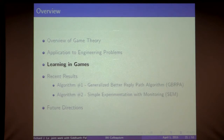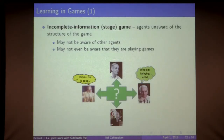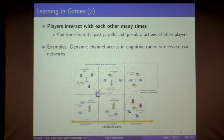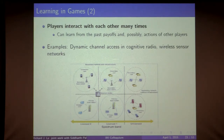Moving to the main topic: learning in games. We consider an incomplete information game where agents are not aware of the game structure — they may not even know other agents are playing, or that they are playing a game at all. However, players may interact many times, as in dynamic channel access in cognitive radio or wireless sensor networks, and can learn from past payoffs and observable actions. That is the setup we are interested in.